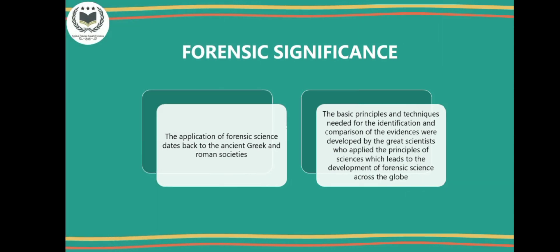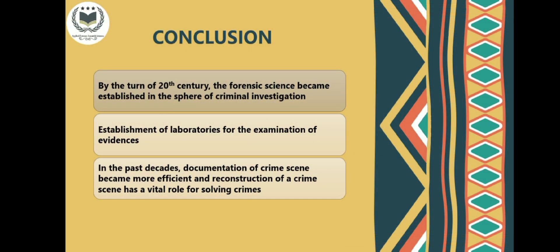Moving on to forensic significance: the basic principles and techniques needed for the identification and comparison of physical evidence were developed by these great scientists and are still followed today. Later, forensic science laboratories and truth labs were established, and approximately 1,200 forensic science laboratories now work across the globe. By the turn of the 20th century, the forensic science field became more established in criminal investigation. In the past decades, documentation of crime scenes has become more efficient and more important for the reconstruction of crime scenes and solving crimes.